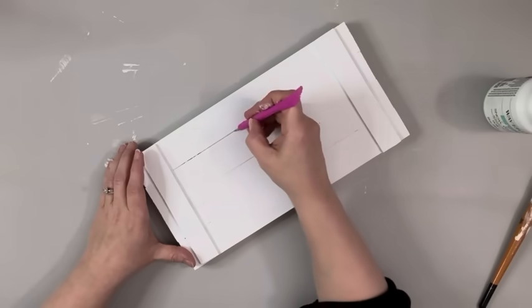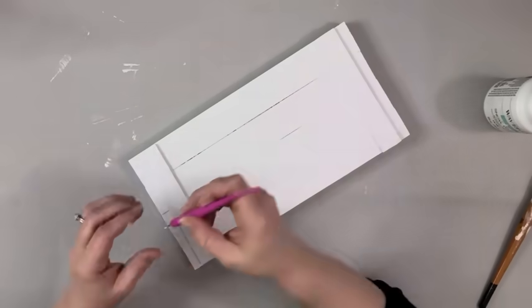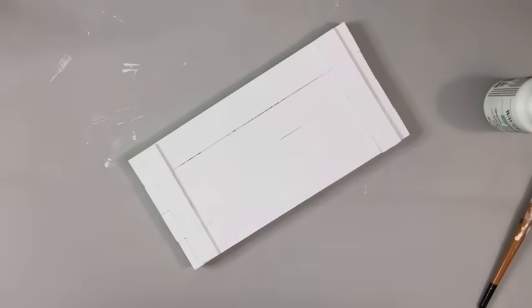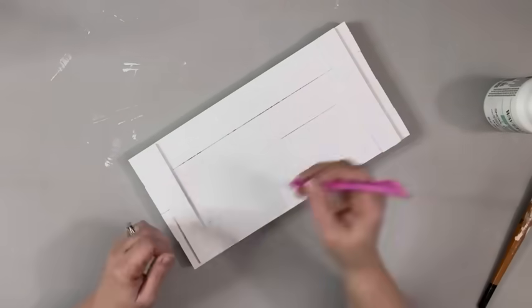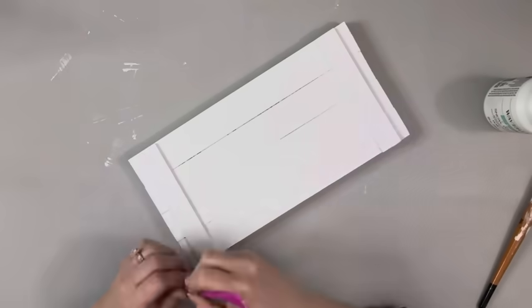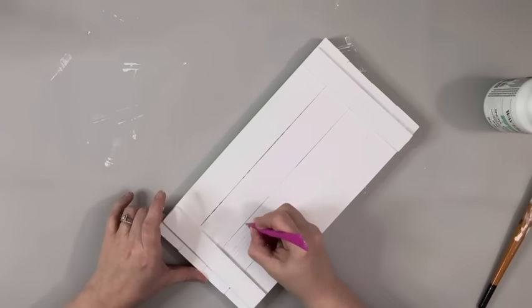Once it's completely dry, I'm taking this little needle tool. I'm not sure exactly what it's called. It's from Dollar Tree. And I'm going along where all of the pieces of wood meet and kind of removing the paint just so you can see those lines on the tray.